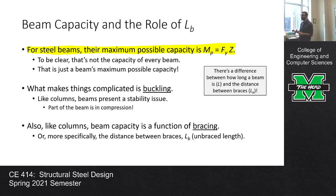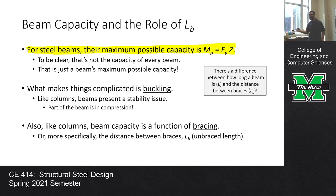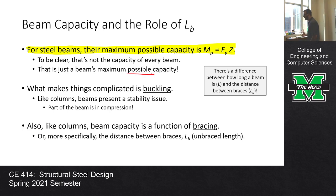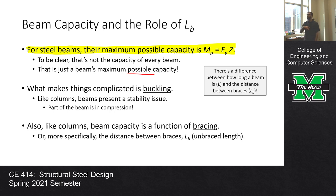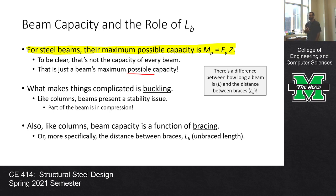The way we denote bracing in beams is we look at the distance between braces. The distance between braces is this term L_B, or what we call the unbraced length. When I say brace, I mean any component of the structure that prevents that lateral torsional buckling action — anything that prevents that lateral motion as the beam wants to buckle. Specifically, we're talking about the compression flange, because that's what's going to generate the buckling behavior.